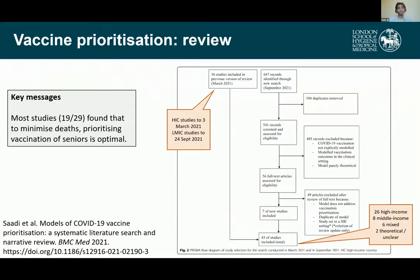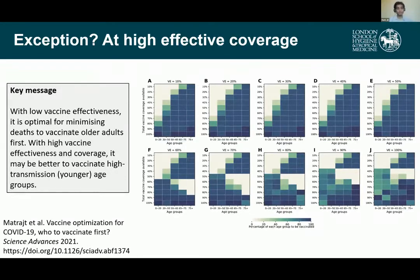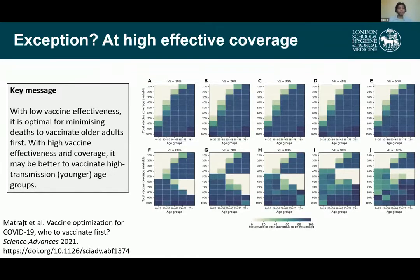But why is it just most studies and not all? There are cases where prioritizing seniors might not be optimal. One is a paper by Dr. Laura Matry, who I think is speaking later, whose main conclusion was: minimizing deaths means vaccinating older adults first, unless you're in a situation with very high vaccine effectiveness and coverage. Basically, if you can reach herd protection very quickly, then sometimes it's better to vaccinate high transmitters instead.